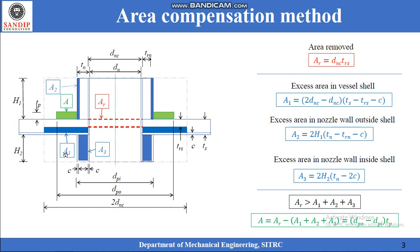Now let us look at the excess areas available. The excess area in the shell is denoted by A1, in the nozzle outside the vessel by A2, and in the nozzle inside the vessel by A3. A1 is given by: A1 = (2·DNC − DNC) × (TS − TRS − C), where 2·DNC is the boundary limit for providing reinforcement. The first bracket is the width of this excess area and the second bracket is its height.